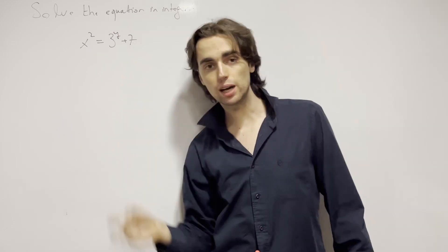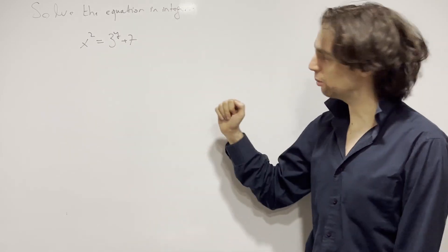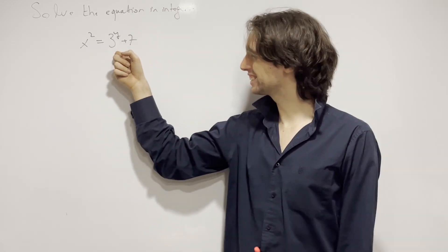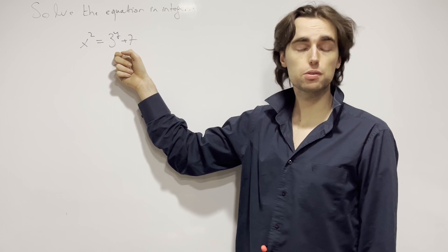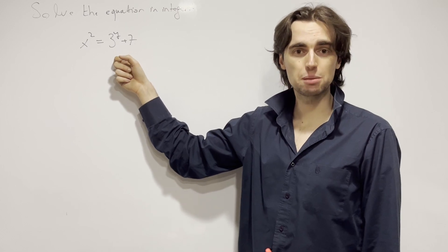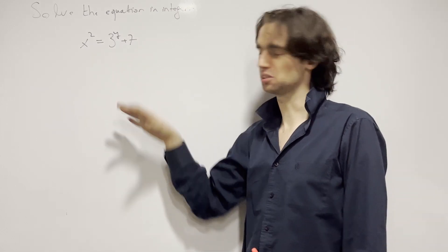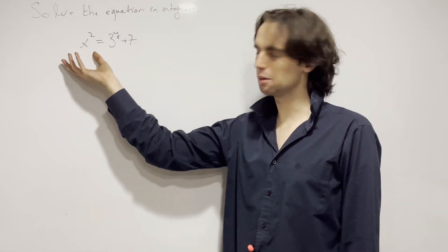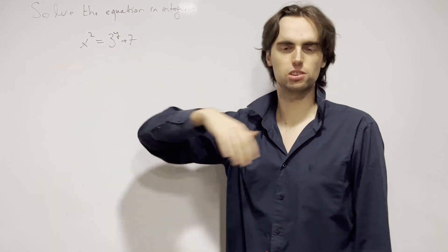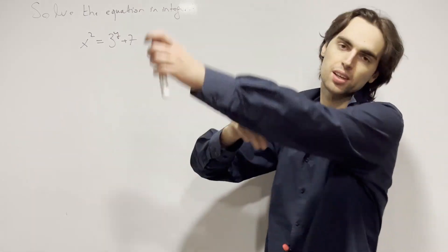What happens if y is negative? Let's get that out of the way. If y is negative, then this is like 1 over 3 to the power of something — a fraction — and adding 7 is still going to be a fraction. It cannot be a square of an integer. So that's out of the way.